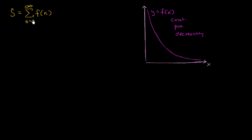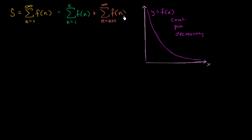So let's think about how we can do that. The way to tackle it is to split this infinite sum into the sum of a finite sum — the first k terms, the sum from n equals one to k of f of n. This is very computable; if k is low enough and f is a simple enough function, you could do this by hand, but you could definitely do it with a computer. And then it's going to be that plus another infinite series starting at k plus one, going to infinity of f of n. So this is just the partial sum of the first k terms plus the remainder, which gets us to the actual value.